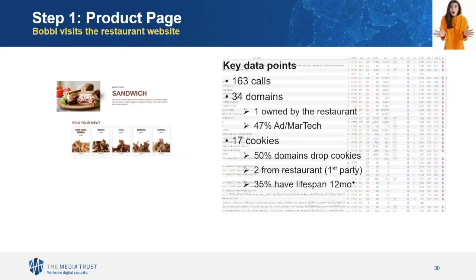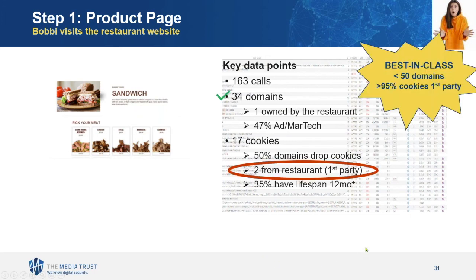Getting through the actual journey — if you think about a consumer's journey, there are four main steps. Step one: Bobby visits the site and wants to order some food, so she's looking through the product pages. While doing that, there are 163 calls made by 34 domains, and only one of those is owned by the restaurant. 17 cookies are dropped and only two are from the restaurant. Best in class is to strive for fewer than 50 domains — this example is pretty good there — but for cookies, 95% should be first party, and here we're hovering around 12% first party.